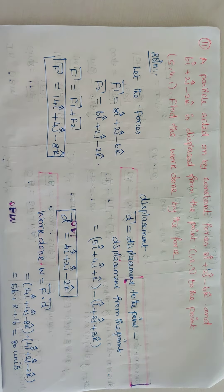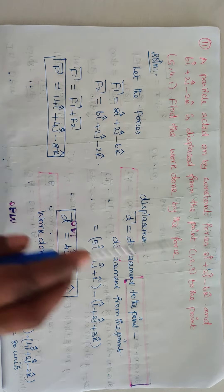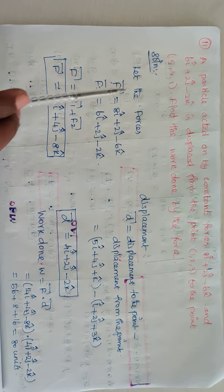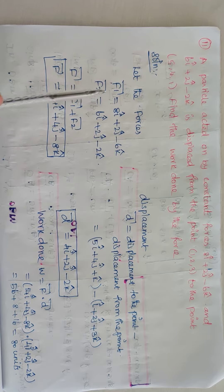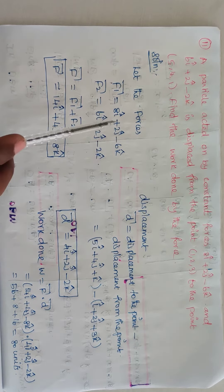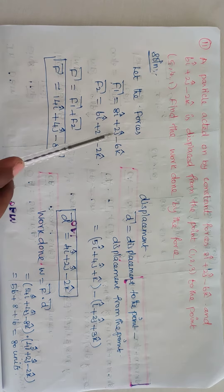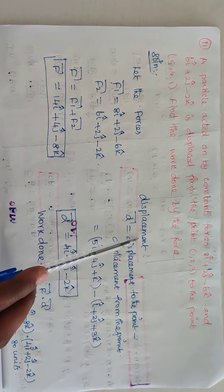The work done W is equal to F vector dot D vector. First we have to find F vector. The two given forces are F1 = 8i + 2j − 6k and F2 = 6i + 2j − 2k. The resultant force F = F1 + F2, so we add: 8 + 6 = 14i, 2 + 2 = 4j, and −6 − 2 = −8k. So F vector = 14i + 4j − 8k.